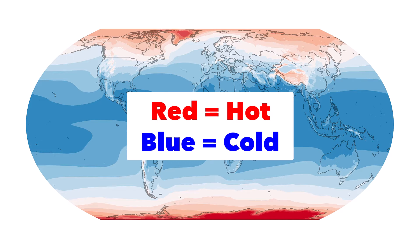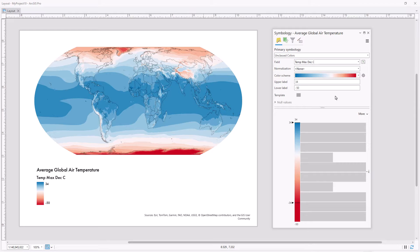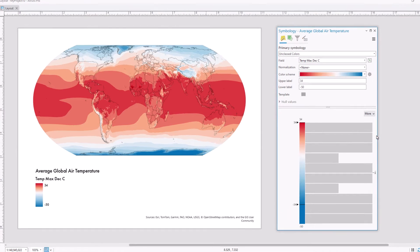The convention in cartography is to use colors that match people's associations and expectations. If I ignore that convention, I could complain all I want that people aren't looking at the legend, but it wouldn't matter. People would still misunderstand my map. It's better if I just reverse the color scheme — that makes my map easier to understand.